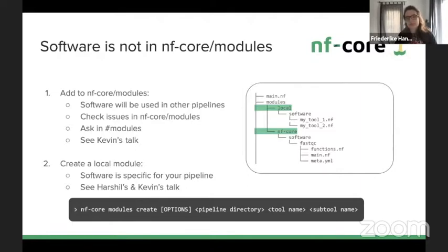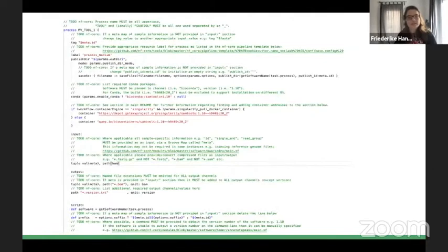Looking at the folder structure, there's the NF-core modules folder we've seen before and a local subfolder where your pipeline-specific processes will live. A lot of what Harshil and Kevin covered in their talks is relevant here, even if Kevin's talk is more tailored towards NF-core modules. The NF-core modules create command gives you a file with many TODO statements and help messages, and you fill it out to get your tool running.